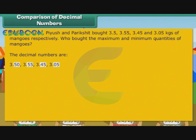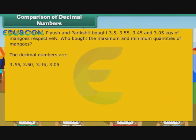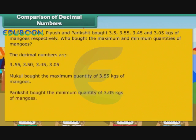The digits after the decimal point are 50, 55, 45, and 05. We know that 55 is greater than 50, which is greater than 45, which is greater than 05. Therefore, the quantities in descending order are 3.55, 3.50, 3.45, 3.05. This means Mukul bought the maximum quantity of 3.55 kgs of mangoes, and Parikshit bought the minimum quantity of 3.05 kgs of mangoes.